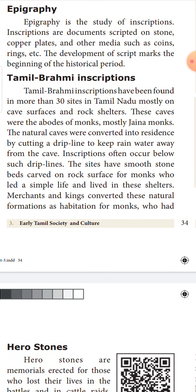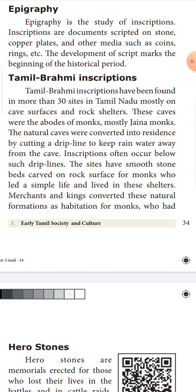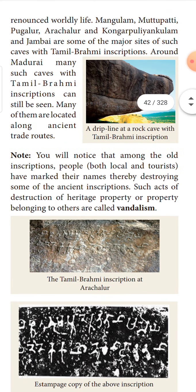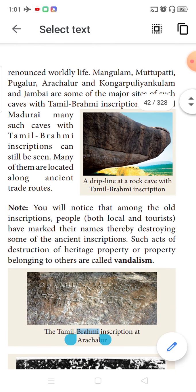The text of Padinen Melkanakku includes Pattu Paatu (10 Idils) and Ettitogai (8 Anthologies). Idil is nothing but short poems describing rural and pastoral areas — how people lived in villages and their livelihoods. The eight anthologies in Ettitogai are: Natrinai, Kuruntogai, Paripadal, Paditrippatthu, Aynkurunuru, Kalitogai, Agananuru, and Purananuru. Each has its own distinctive criteria, taking a particular topic and compiling poems regarding that.